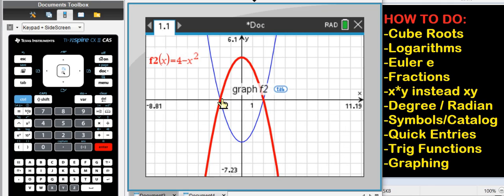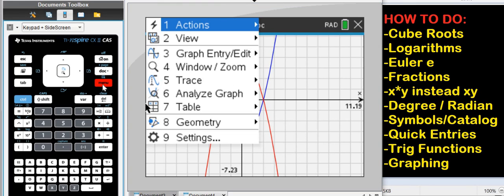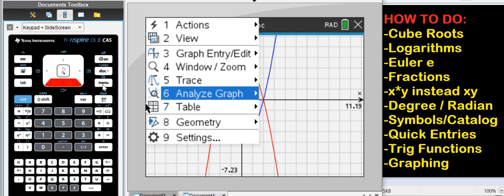Now you want to know what are the zeros, what are the x-intercepts, or the, sorry, the intersection points, etc. All of that is found by pressing the menu button and then you go to analyze.